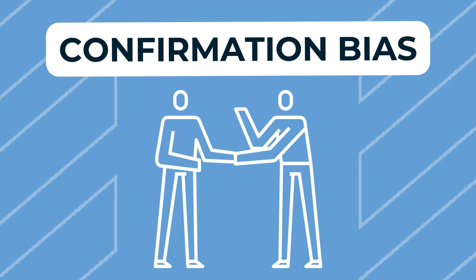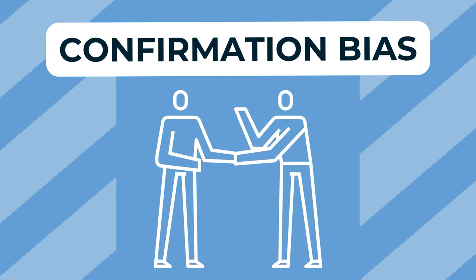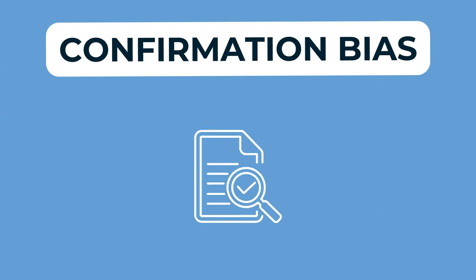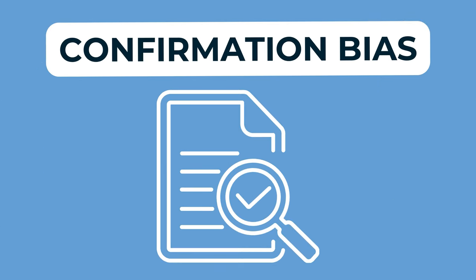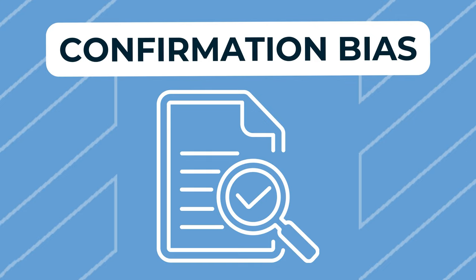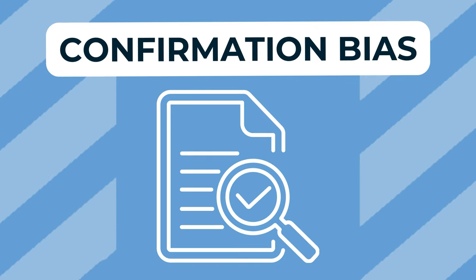Confirmation bias is usually unintentional, but it's important to know it exists. By reviewing evidence from various sides of an argument and incorporating it into your reasoning, you'll be more informed and persuasive in your research.